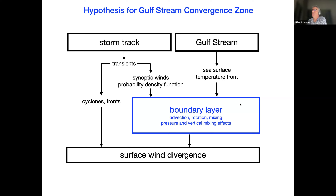So we are looking at this boundary layer response to the advection and possibly rotation — the vertical mixing, the overall background mixing — and of course the pressure and vertical mixing effects, all in response to the daily changing winds and the sea surface temperature front of the Gulf Stream.